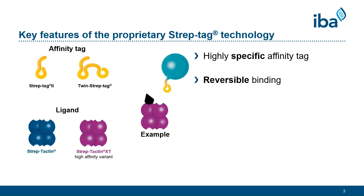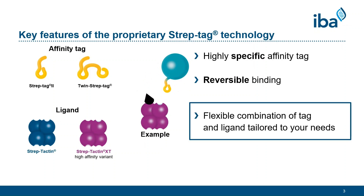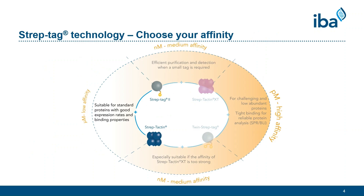Importantly, tags and ligands can be combined freely, but specific combinations can be used to address common problems in protein purification to ensure the best possible purification outcome in your experiments. Among all combinations, Streptactin and Streptag 2 have the lowest affinity. This combination is therefore best used for proteins with good expression rates. Streptactin XT is the ligand with the highest affinity to both Streptag 2 and twin-streptag. The combination of Streptactin XT with Streptag 2 is therefore especially suitable for efficient purification and detection when a small tag is required.